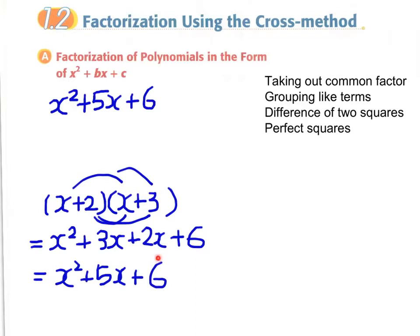You can see that the last term, 6, this constant term, comes from the product of 2 and 3. And the middle term, the coefficient of x which is plus 5, comes from the sum of 2 and 3.